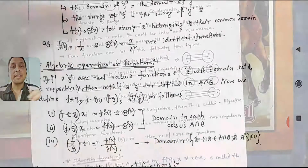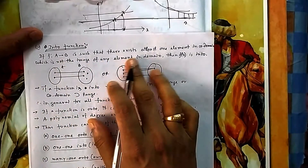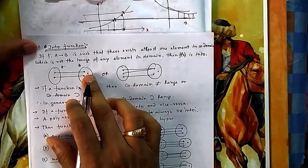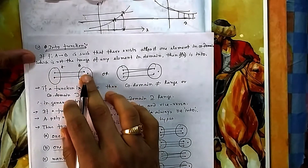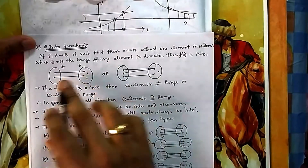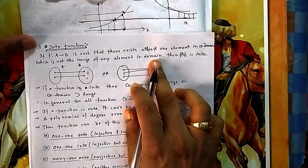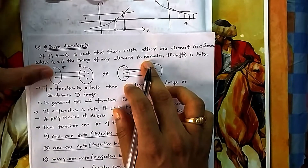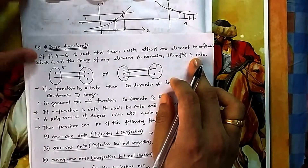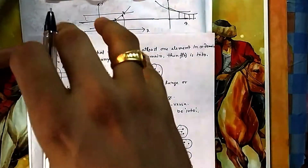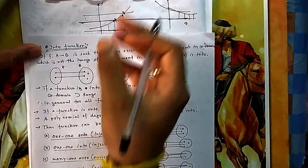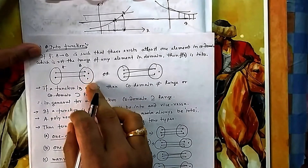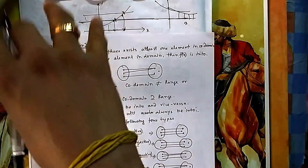Let's look at into mapping or into function. If a function f: A → B is such that there exists at least one element in B which is not the image of any element in A (the domain), then f(x) is called an into function. Into means you are going inside, so something is left out. Onto means you are going on top, so everything is covered.